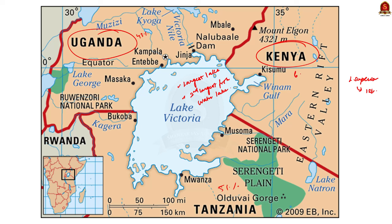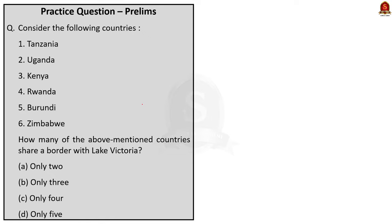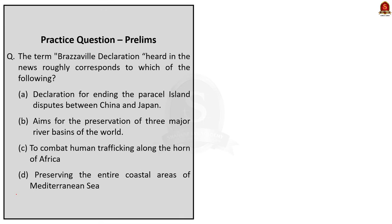Lake Victoria is generally referred to as Darwin's Dream Pond, because the lake is known for its high level of unique biodiversity. Lake Victoria is also a source of the White Nile River, which flows northward and eventually joins the Blue Nile in Sudan to form the great Nile River of Africa. So it's bordered by only three countries — Tanzania, Uganda and Kenya — making the correct option B.